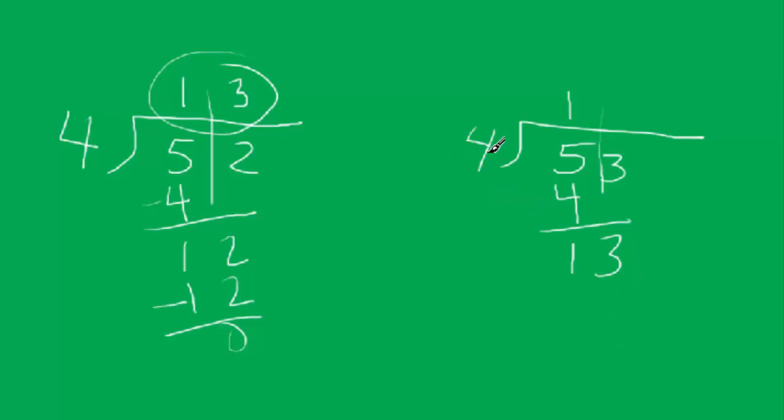So we know the same thing: 4 goes into 13 3 times. So we go 12. Now we have remainder 1. So if we're looking at just whole numbers and no decimals, then we'd come up here and we'd say remainder 1. 13 remainder 1.